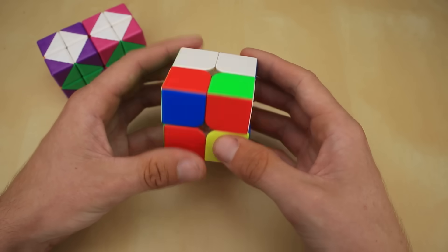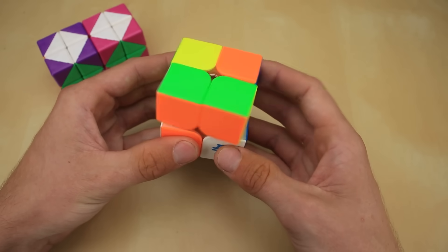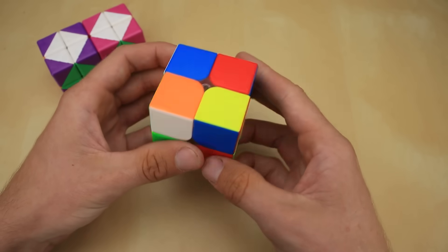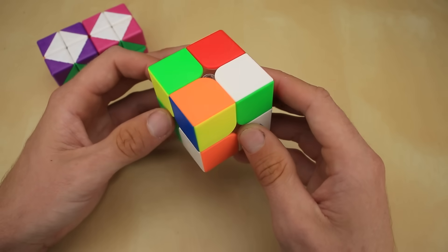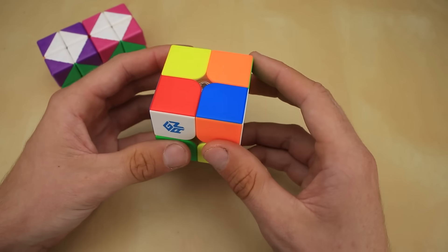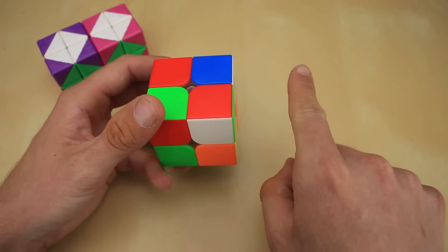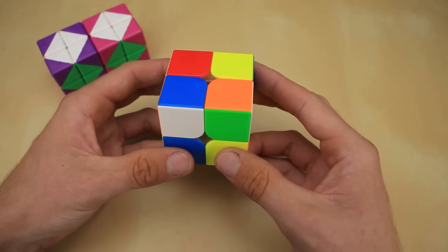We can reorient again, do some U moves over here, and now things are getting really scrambled up, even though we're only allowed to do one type of move. Now, because this is a three-dimensional cube, reorienting it is as simple as just moving it around in our hands. We can swap around where all the different axes are as easy as this.